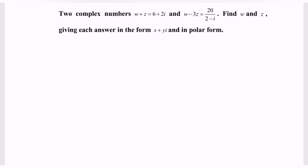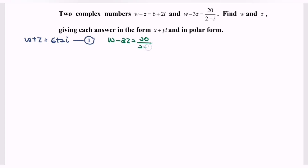We have two equations: the first equation is w plus z equals 6 plus 2i, and the second equation is w minus 3z equals 20 over (2 minus i). In order to find z, we need to solve these simultaneously.